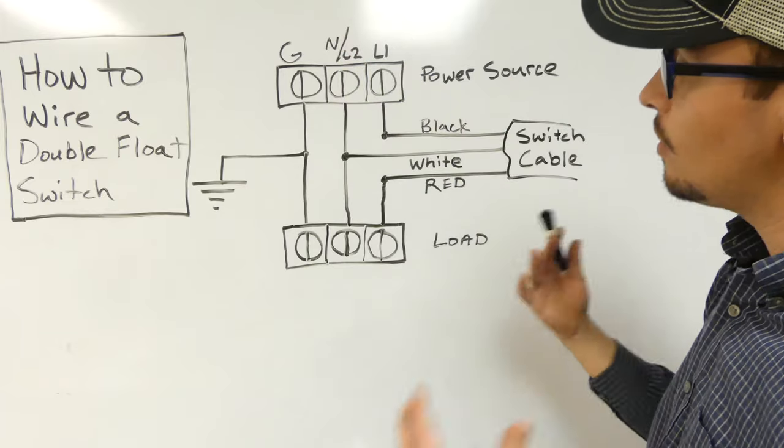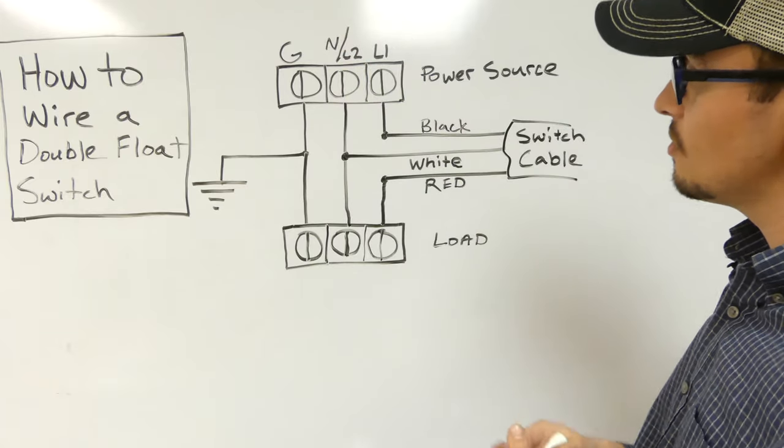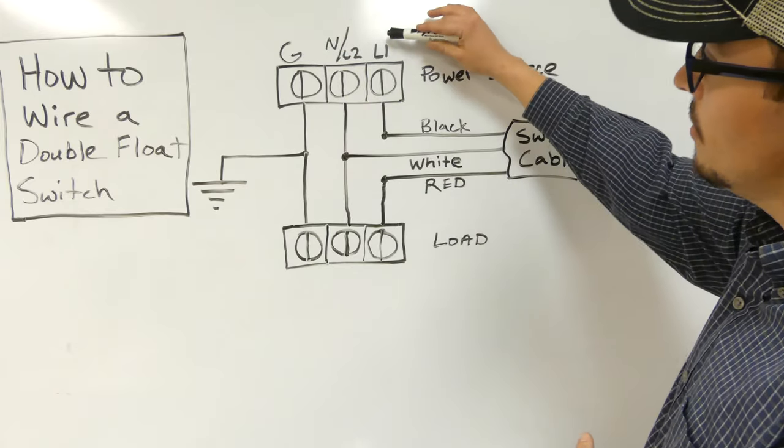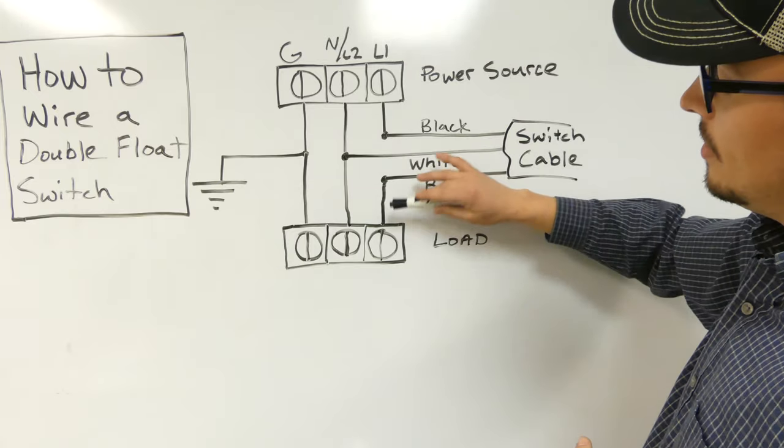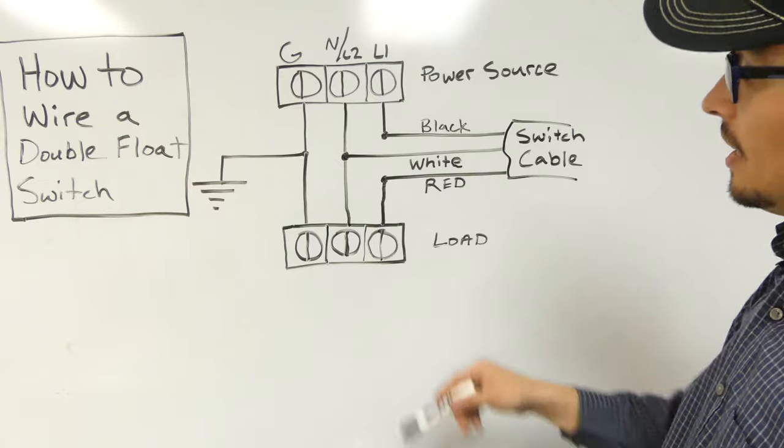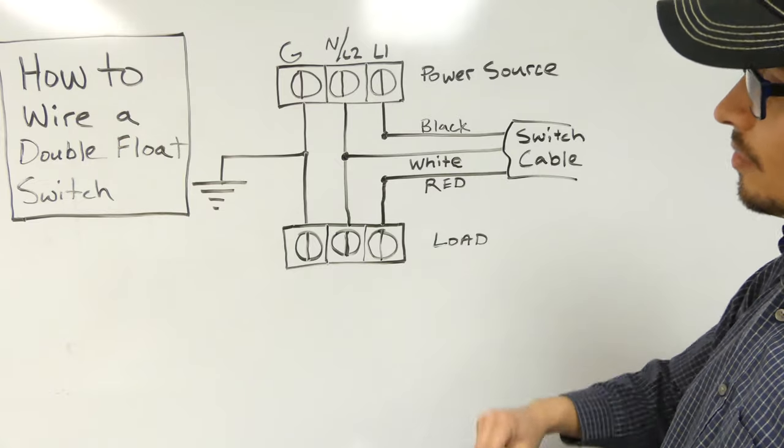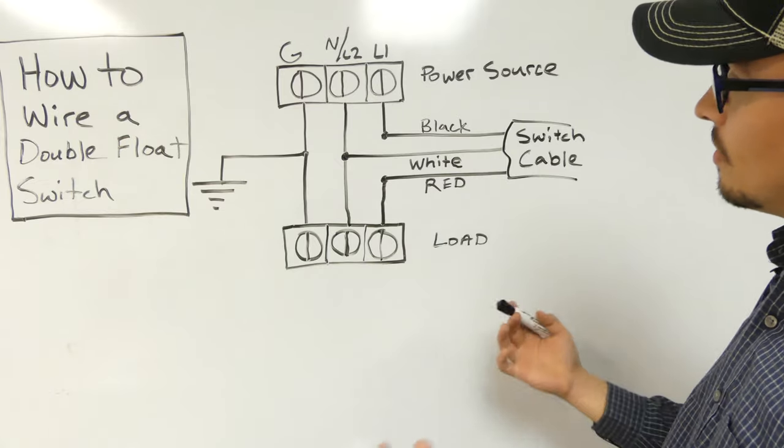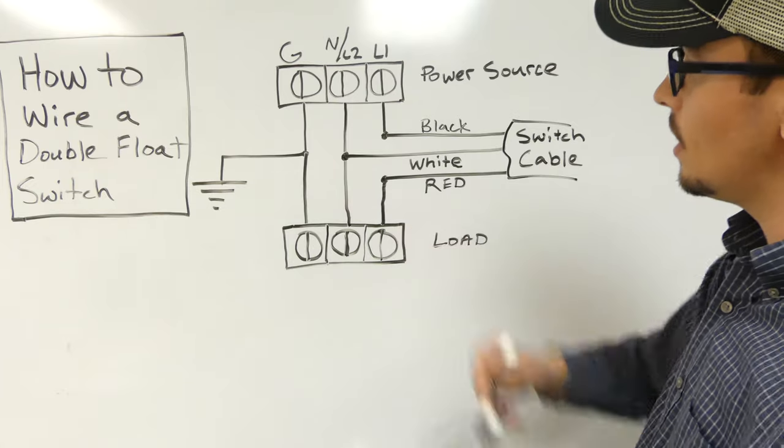Now this could be a wire nut, this could be a terminal. However you're hooking it up doesn't really matter. But what we're doing on the other side of the L1, which this would be our load side. So if you're using this for a pump, this would be your L1 or your hot in 120 volt configurations, you would hook that to the red wire.